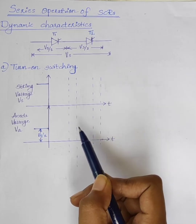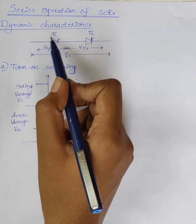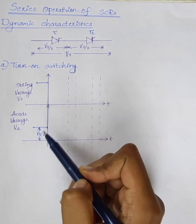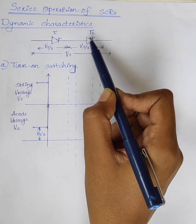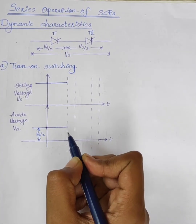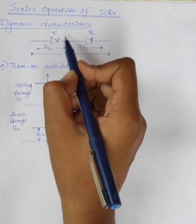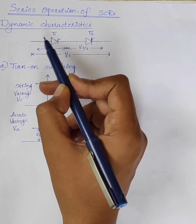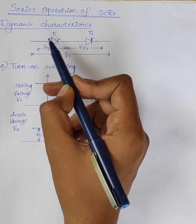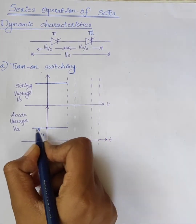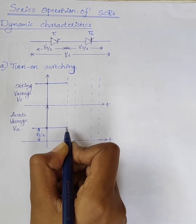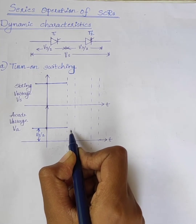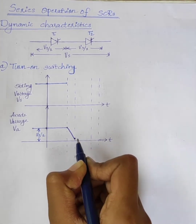The turn-on time of thyristor T1 is less than compared to the turn-on time of thyristor T2. At time T equals 0, we are applying gate pulses to both SSRs T1 and T2. Since T1 has less turn-on time, it will get turned on at the instant T1. Up to this point both T1 and T2 have the same characteristics.